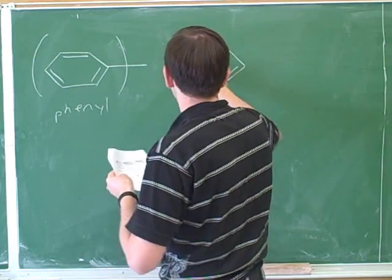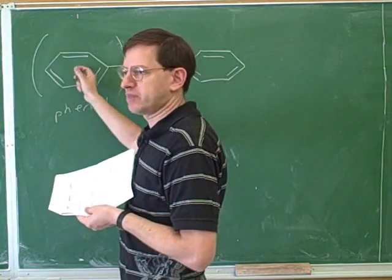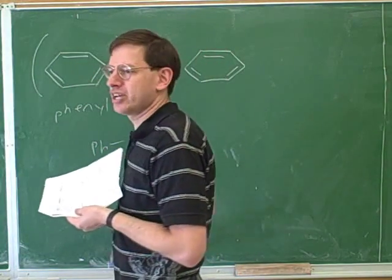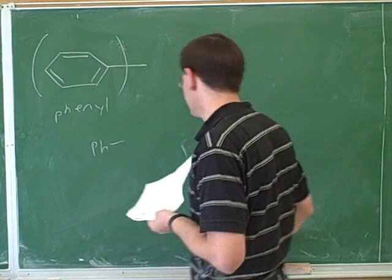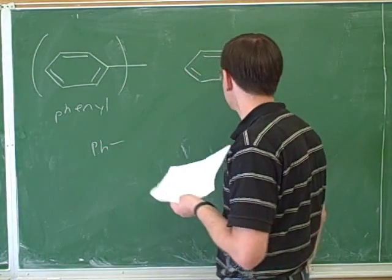In fact, I think we've already talked about how when you're doing the mechanism, it's helpful to abbreviate the benzene ring as just Ph. That way you don't have to keep writing it out over and over. So we've already been using this idea that a benzene substituent is a phenyl group.